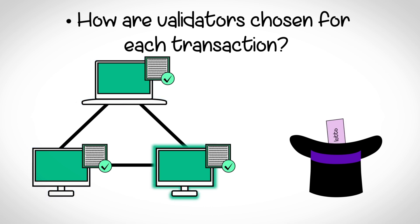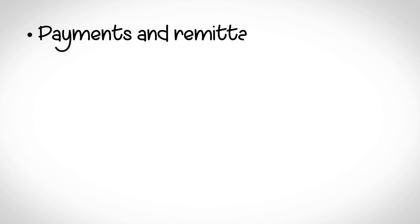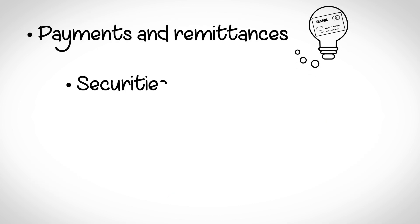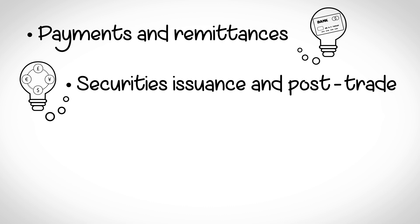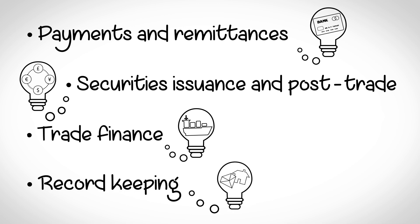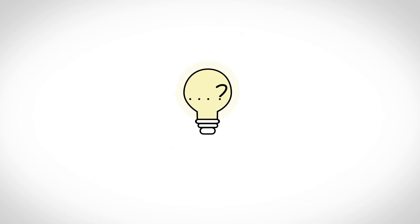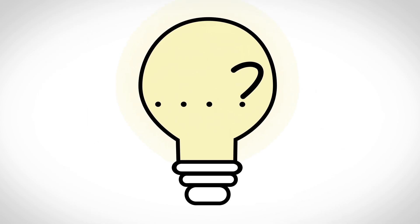In financial services, we are looking to use blockchains to make payments or send money easily, to store the ownership of securities and record transfer of ownership, and for supply chain finance. Elsewhere, blockchains are already being used for record keeping, for things like provenance of assets such as diamonds, and land registry. But this is just the beginning — probably the best use cases have not even been thought of yet.